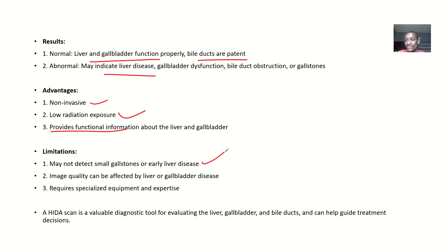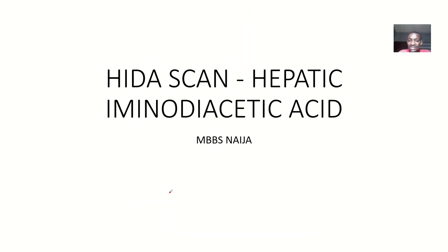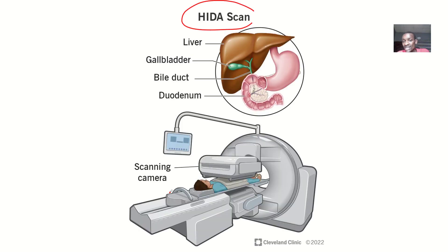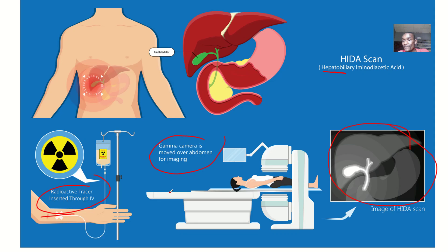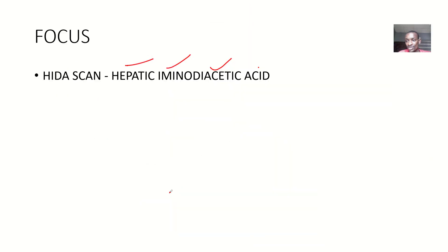The limitations are that it may not be able to detect small stones or certain liver diseases. Image quality can be affected by liver or gallbladder disease. It also requires specialized equipment and expertise. So that covers the HIDA scan — also called cholescintigraphy or the hepatobiliary iminodiacetic acid scan — which goes by many names.